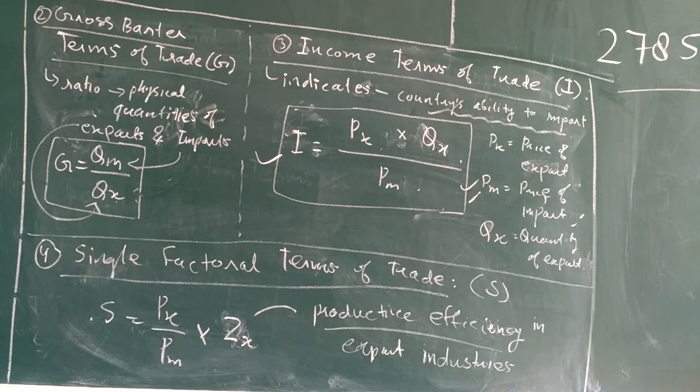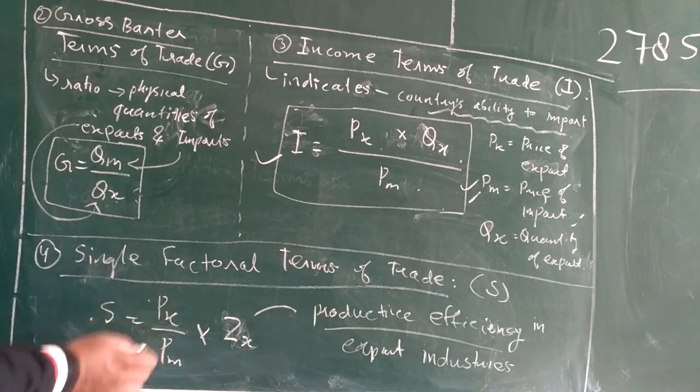Next is single factorial terms of trade, which is signified by S. Single factorial terms of trade is S = (Px/Pm) × Zx.